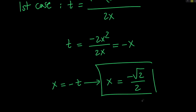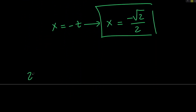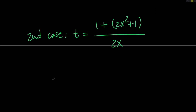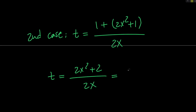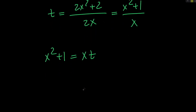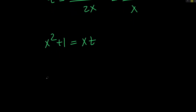Let's go ahead and talk about the second case. In the second case, t equals 1 plus the quantity (2x squared plus 1), divided by 2x, which means that t is equal to (2x squared plus 2) divided by 2x, which simplifies to (x squared plus 1) divided by x. So if I cross-multiply, I can say that x squared plus 1 equals x times t. And if I replace t with √2/2, I'm going to get x squared minus (√2/2) times x plus 1 equals 0.